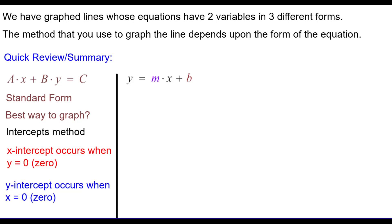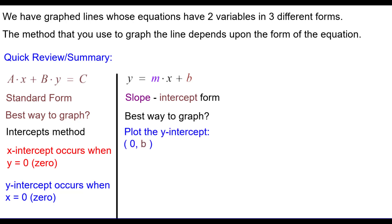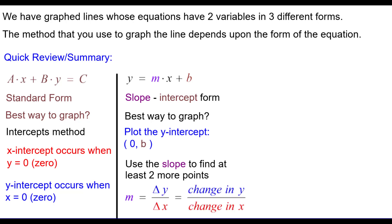y equals m times x plus b is called slope-intercept form. The best way to graph: plot the y-intercept first using the coordinates (0, b). Use the slope to find at least two more points, and recall that slope is the change in y over the change in x.